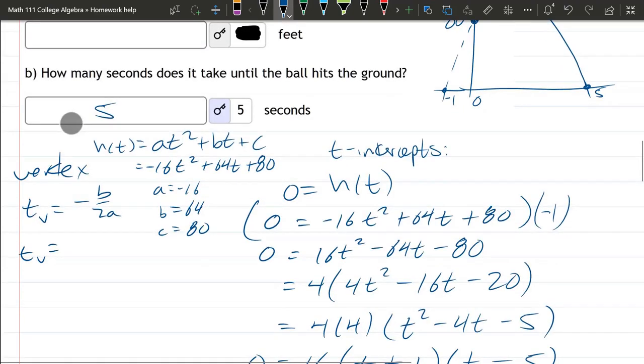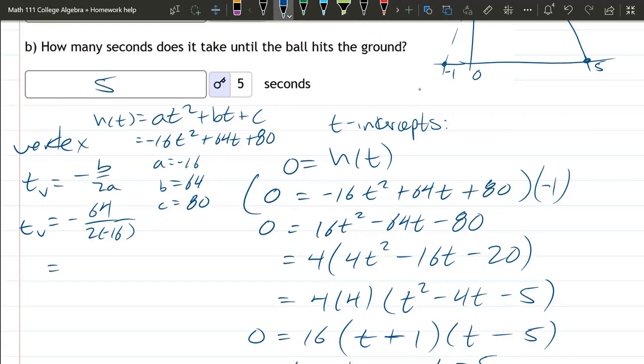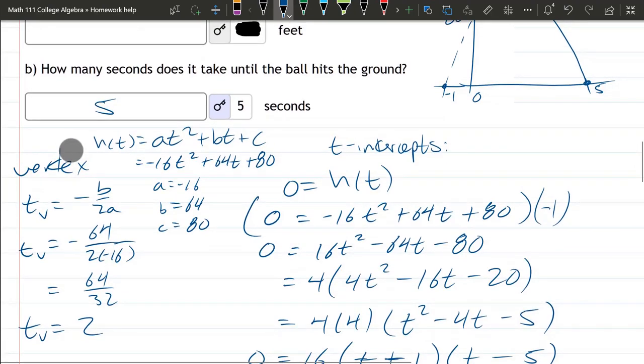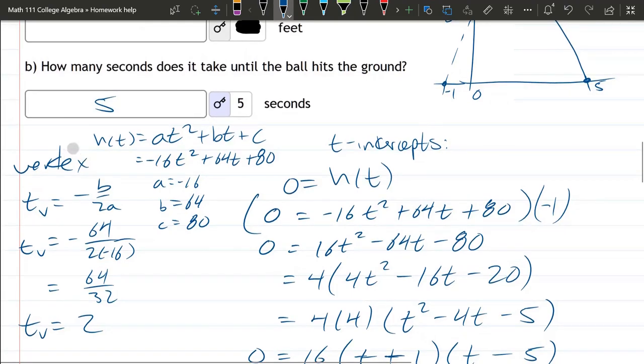tv is negative 64 over 2 times negative 16. So we have both negatives will cancel. So we have 64 over 32, which is 2. So our vertex t coordinate is 2. Let's talk about why that makes sense for a minute and how you could have gotten that earlier.